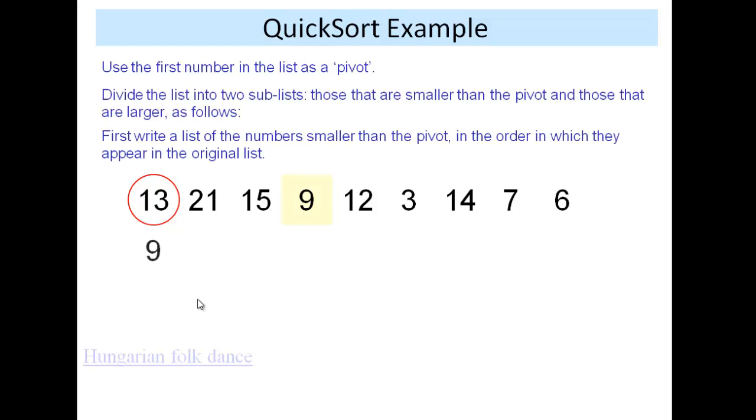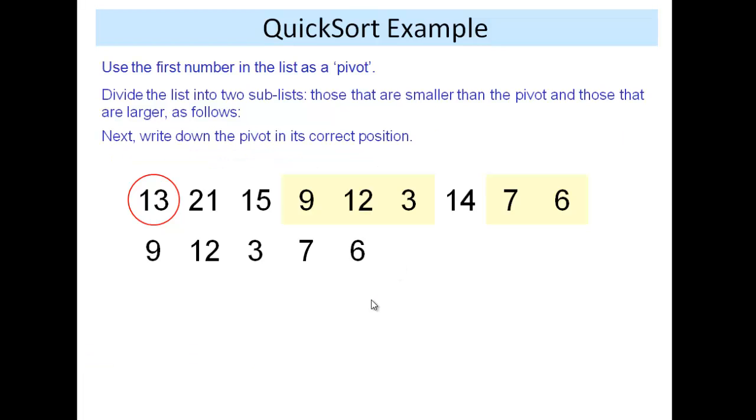So the numbers smaller than the pivot, 9, 12, 3, 7 and 6 all go to the left of it. We can now put our pivot in. We know this is in the right place.